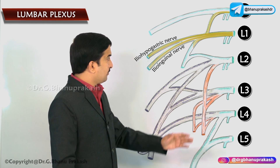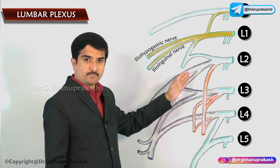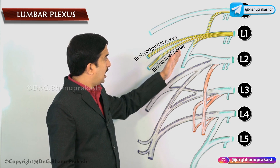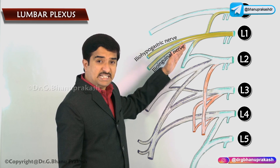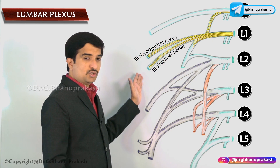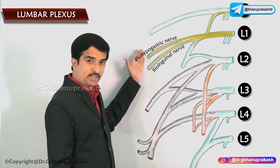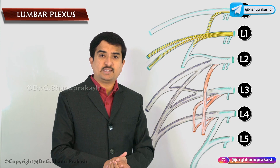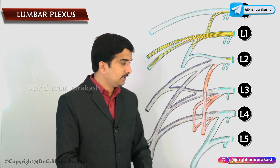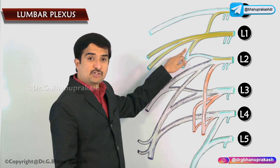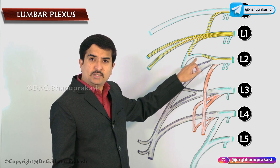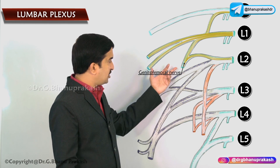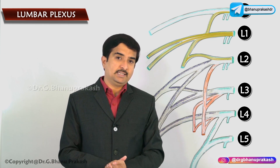The smaller lower branch of L1 joins with a branch from the L2 nerve to form the genitofemoral nerve. This is how the genitofemoral nerve is formed by the lumbar plexus.